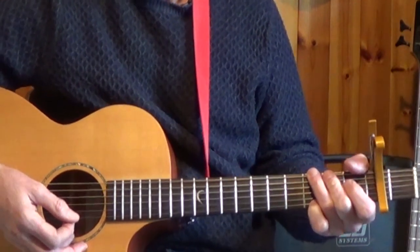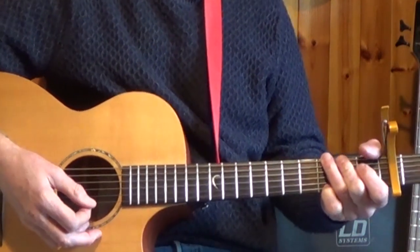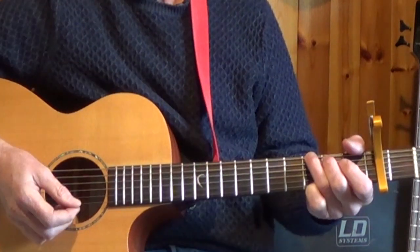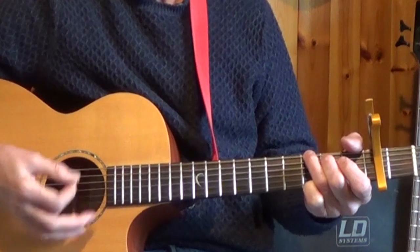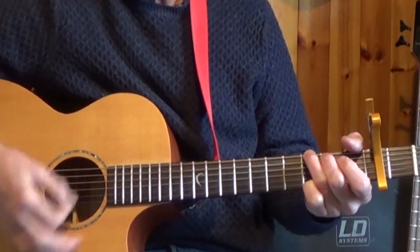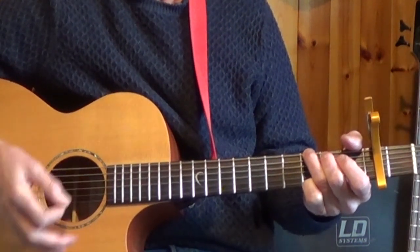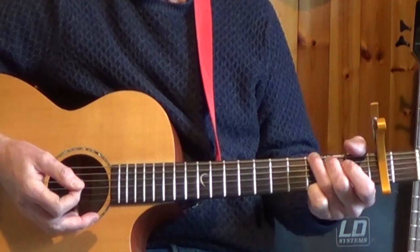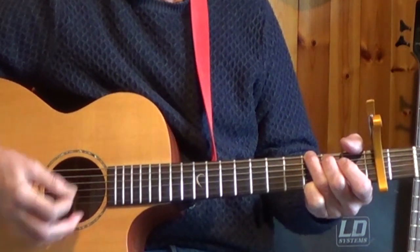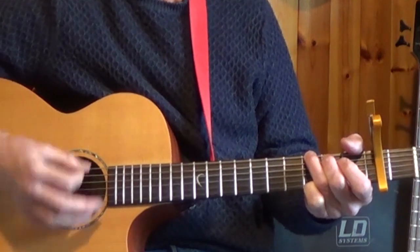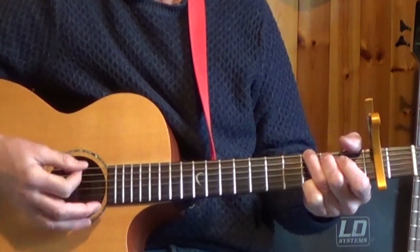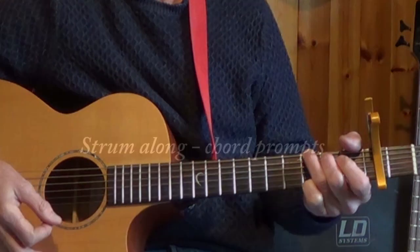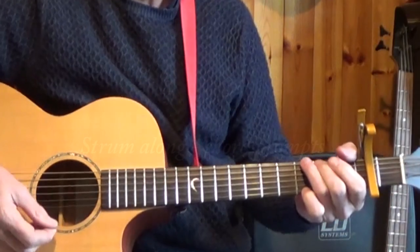Now the strum pattern I'm using is as follows. It's in 3-4 time, fast 3-4 time. So concentrate on the down strums, keeping the time: 1-2-3, 1-2-3, 1-2-3, 1-2-3. And then you can add an up strum after the 2nd beat or the 3rd beat, or both. 1-2-3, 1-2-3, 1-2-3, 1-2-3, or just 1-2-3.